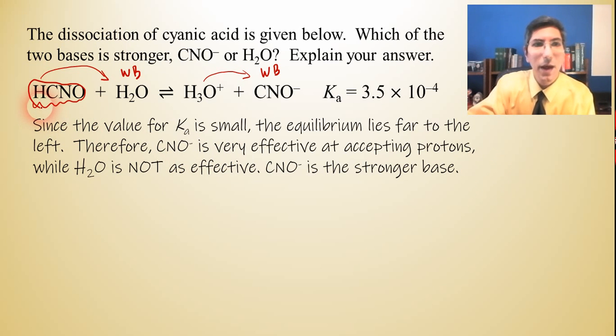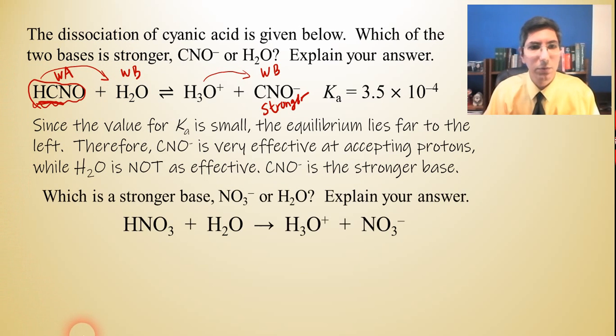So, just as a rule of thumb, if you have a weak acid over here, that means that its conjugate base is still going to be a weak base, but it's going to be stronger, at least compared to water. Water is really not very good at picking up hydrogens over here. Let's try another example. Let's say we have this case, which is a stronger base, nitrate or water. Explain your answer.